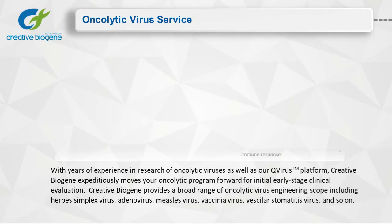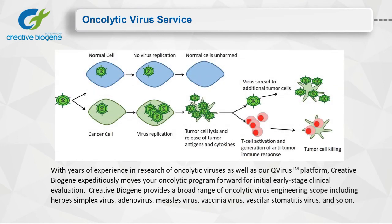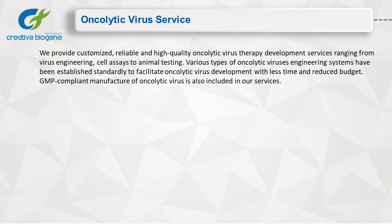With years of experience in research of oncolytic viruses as well as our Q-virus platform, Creative Biogene expeditiously moves your oncolytic program forward for initial early-stage clinical evaluation. Creative Biogene provides a broad range of oncolytic virus engineering scope including herpes simplex virus, adenovirus, measles virus, vaccinia virus, vesicular stomatitis virus, and more. We provide customized, reliable and high-quality oncolytic virus therapy development services ranging from virus engineering and cell assays to animal testing. Various types of oncolytic virus engineering systems have been established to facilitate oncolytic virus development with less time and reduced budget. GMP-compliant manufacture of oncolytic virus is also included in our services.